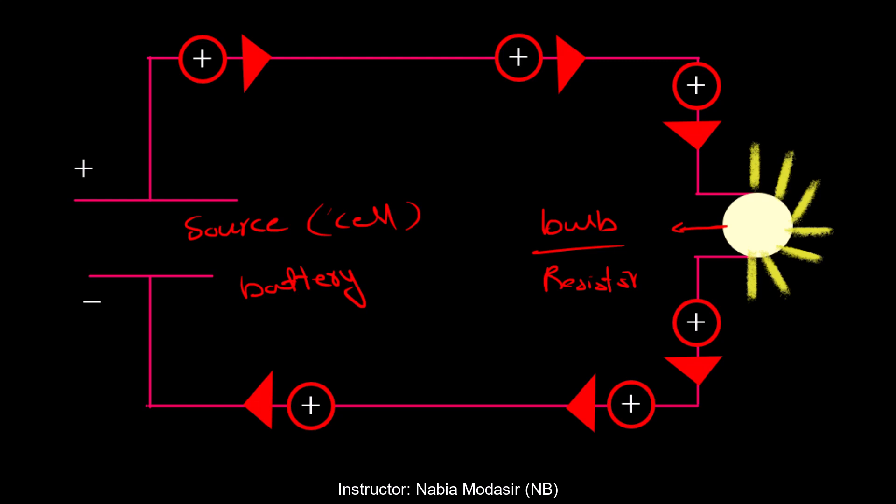But this neutralization never happens as long as the battery is charged. Why? Because there is something inside the battery that never lets the positive charge stay at the negative terminal. When the positive charge arrives there, something pushes those positive charges back to the positive terminal. By this strategy, the circulation of charge keeps flowing and the bulb always lights, because this flow of charges always gives us current.